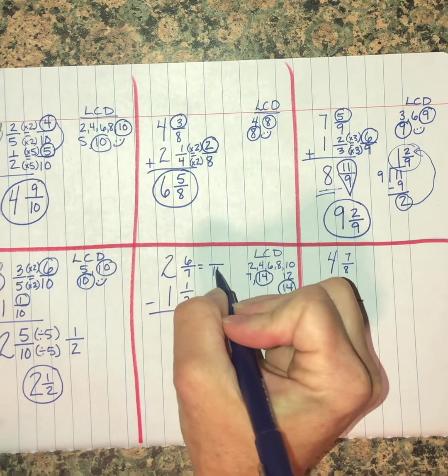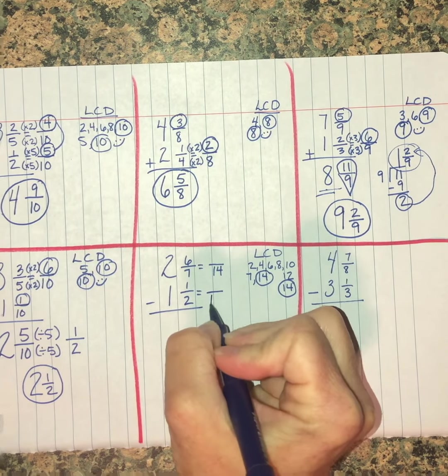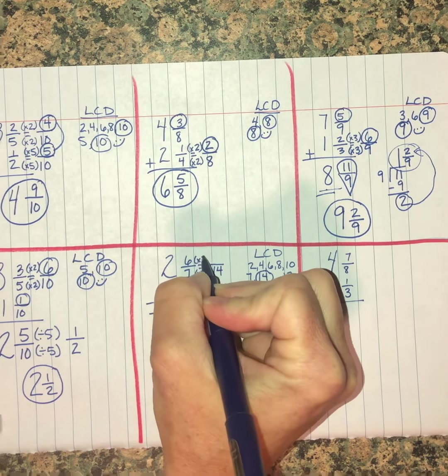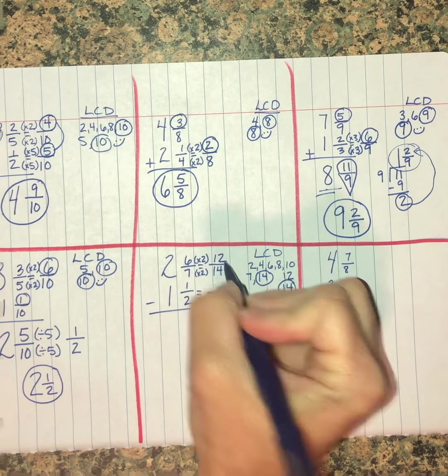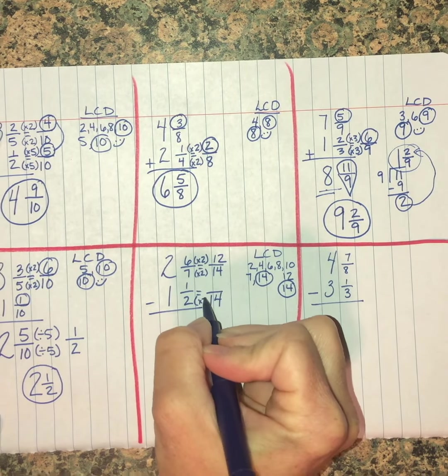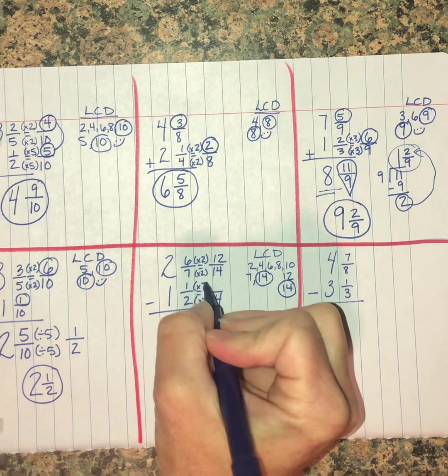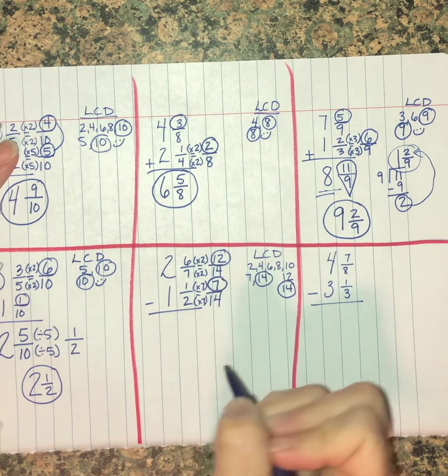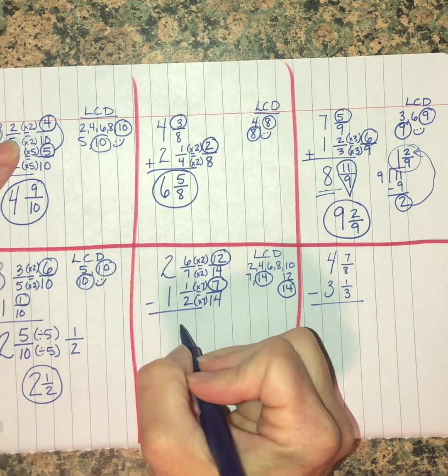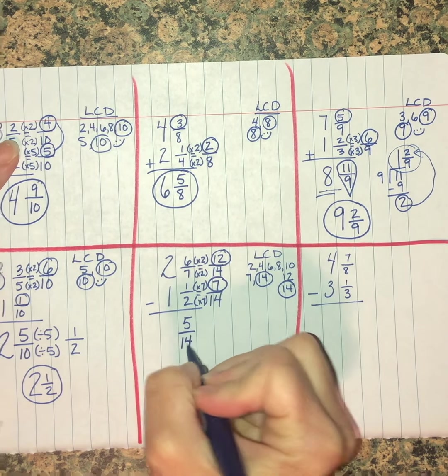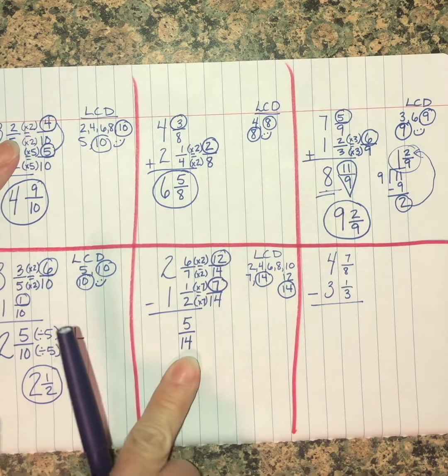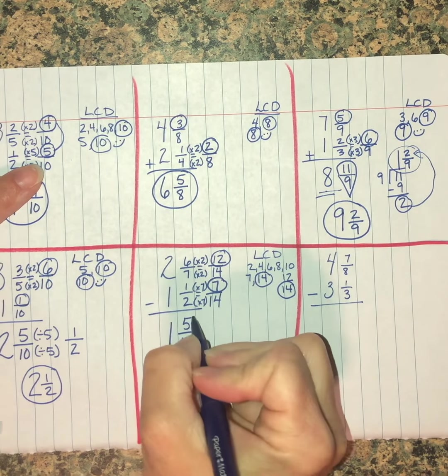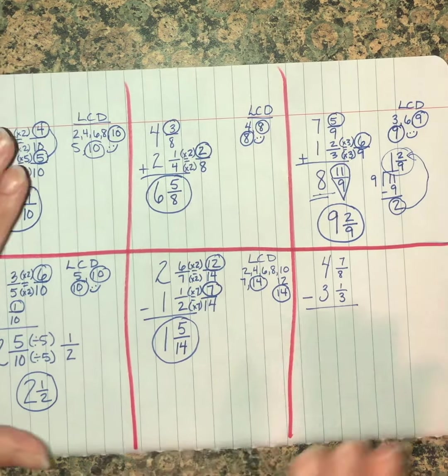So I'm going to change these both into fourteenths. Seven times two is fourteen, so six times two is twelve. Two times seven is fourteen, one times seven is seven. Now I'm going to subtract twelve minus seven and I get five-fourteenths. Five is a prime number and I can't divide fourteen by five, so I don't need to simplify this. And two minus one is one, and I'm done.